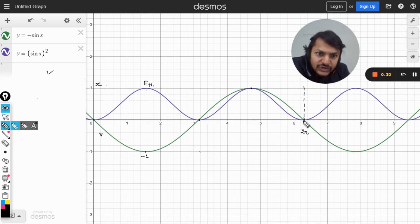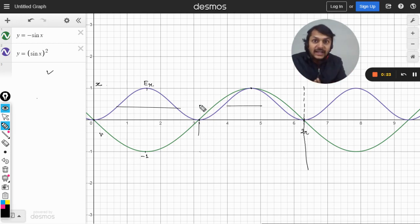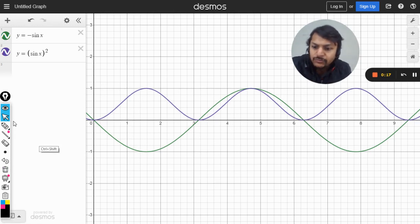It means that in one oscillation, the kinetic energy is having two oscillations—one this, another this. So two oscillations for the kinetic energy means the frequency is double.